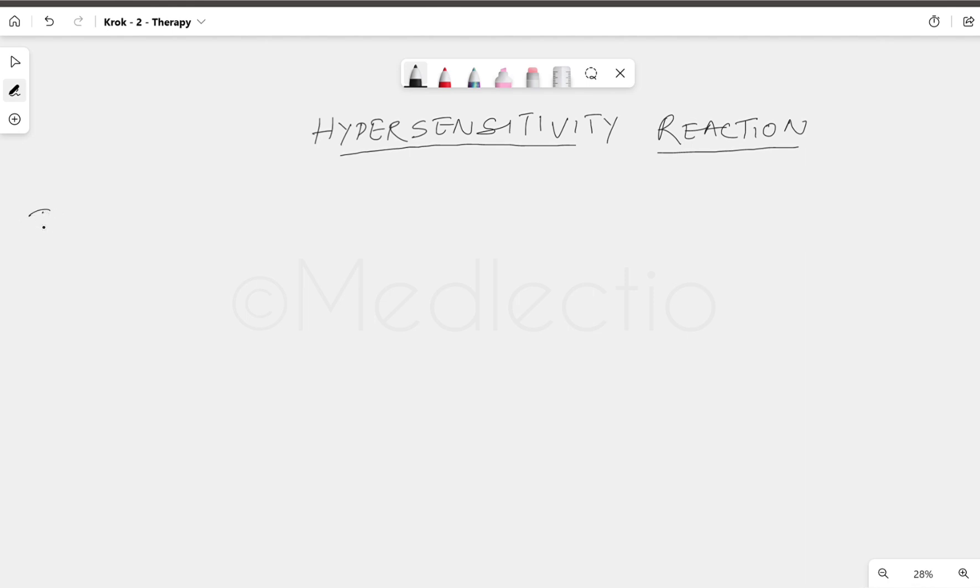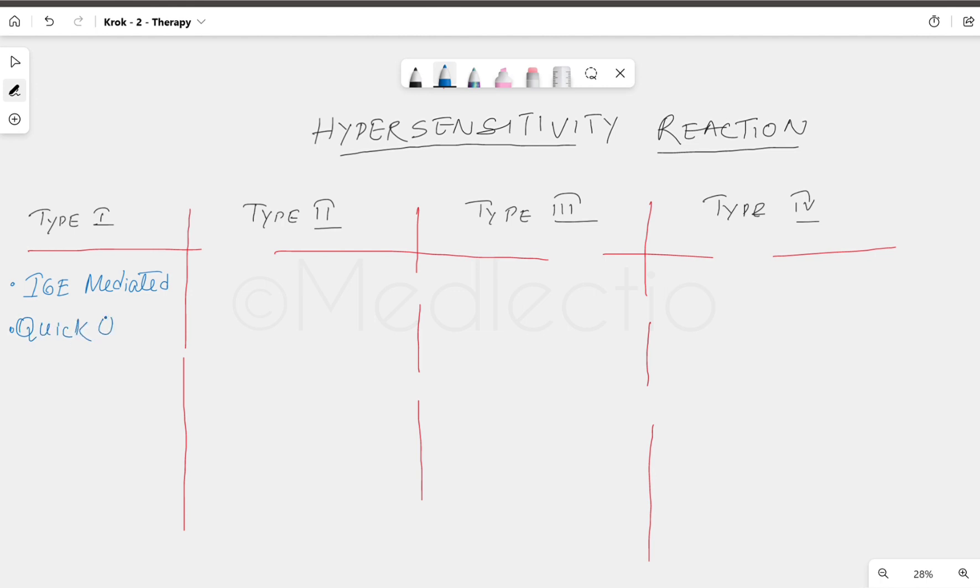There are four types: Type 1, Type 2, Type 3, and Type 4. Let's divide it so you understand properly. Make this chart—this is very important for any type of exam. Questions are sure shot in any exam like KROK 2 or FMG. You can expect one question from here. If you remember this chart, the questions will be easy.